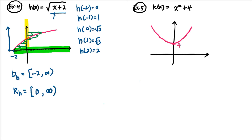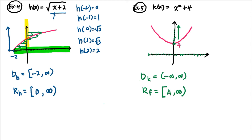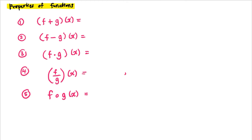For example 5, k(x) = x² + 4. There is no restriction, so we can substitute any value of x — negative 10, negative 2, 0, 500, and so on. The domain of k is (-∞, ∞). The smallest output occurs at x = 0, giving k(0) = 4, so the range is [4, ∞).